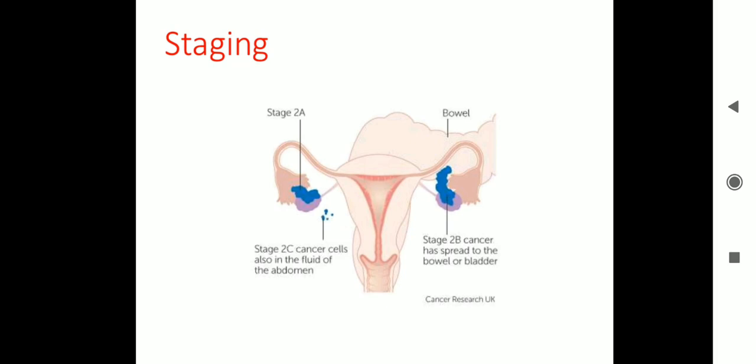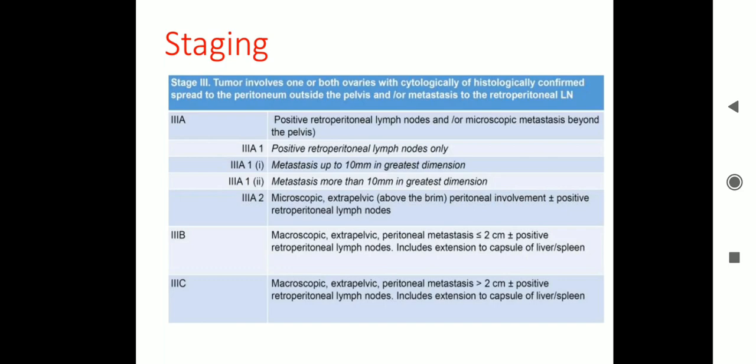Stage 3A: tumour involves one or both ovaries with cytologically or histologically confirmed spread to the peritoneum outside the pelvis and/or metastasis to the retroperitoneal lymph nodes. Stage 3A1: positive retroperitoneal lymph nodes only — subdivision 1 is metastasis up to 10 mm in greatest dimension; subdivision 2 is metastasis more than 10 mm in greatest dimension. Stage 3A2: microscopic extrapelvic peritoneal involvement (above the brim), plus or minus positive retroperitoneal lymph nodes.